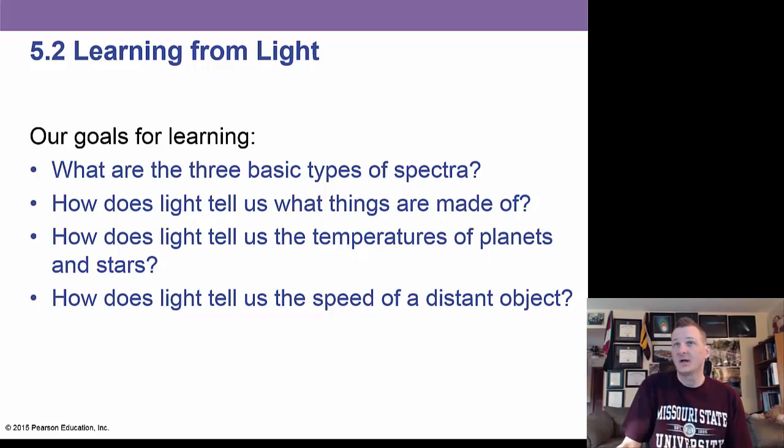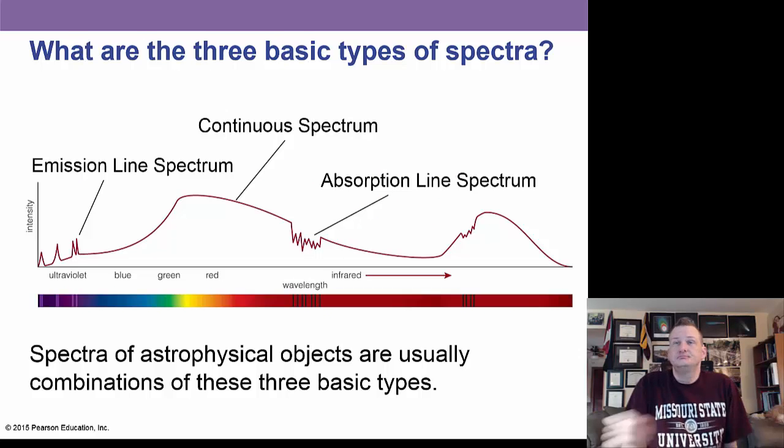And now we'll go into learning more about light. We're going to learn about the three types of spectra light can produce. How light can tell us what the temperatures of planets and stars are. And even how light can tell us the speed of a distant object.